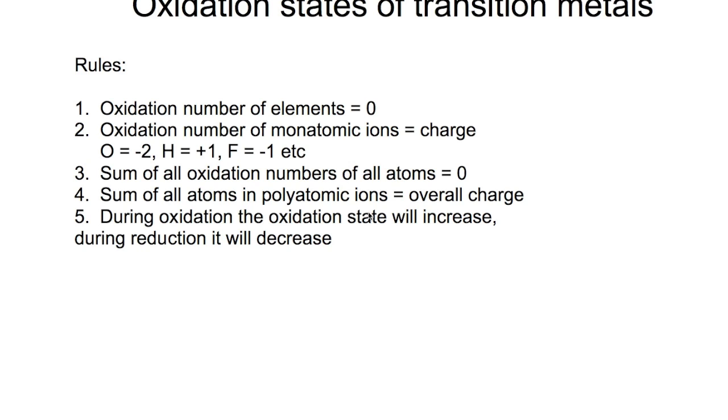When we are calculating the oxidation state of a transition metal, there are a few rules that we need to follow. So the oxidation number of elements that are uncharged is always zero. The oxidation number for monatomic ions is the same as their charge. So for oxygen it's two minus,